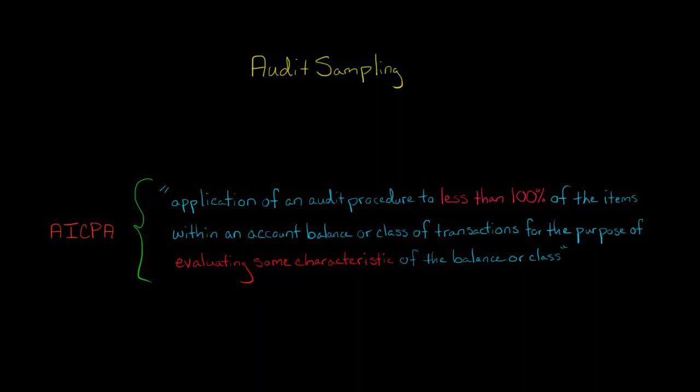Think about if you're auditing Walmart and you're trying to count their inventory. You can't go, if you're the auditor, you can't go to every single Walmart and count all the inventories. You're going to do less than 100% and then you're going to try and evaluate some kind of characteristic about the inventory balance or the class of transactions, whether it be a list of purchases and so forth.